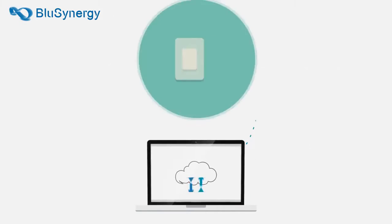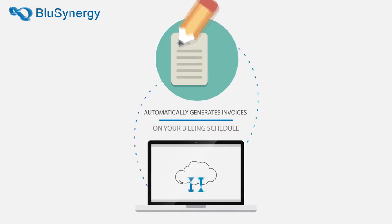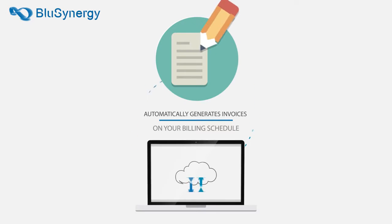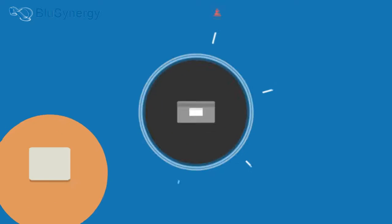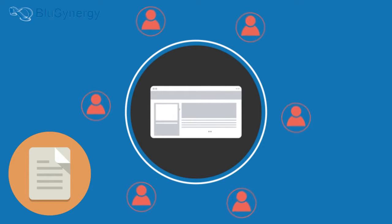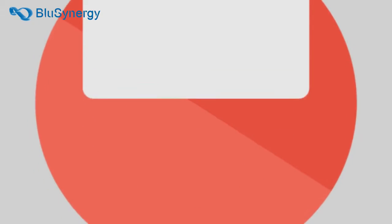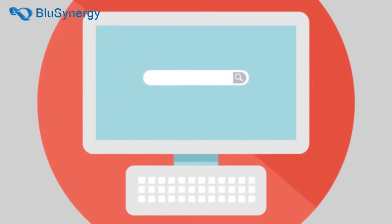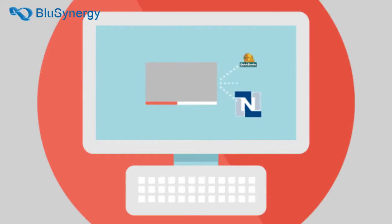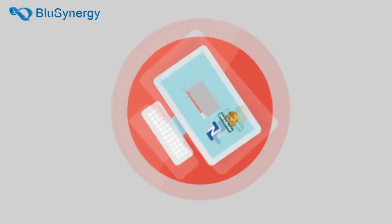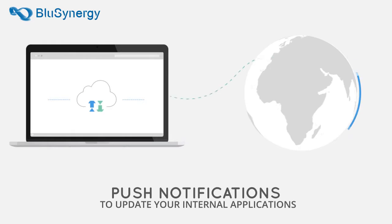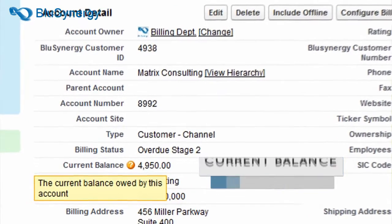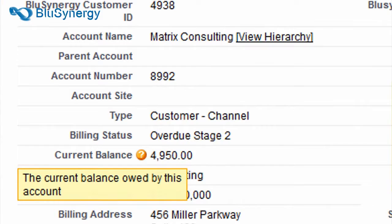Blue Synergy's billing engine automatically generates invoices on your billing schedule. We handle bill presentment to your customers and make the invoices available on the self-service portal inside your website. You may want to use the Blue Synergy ERP connectors to automatically synchronize your accounting systems like QuickBooks and NetSuite, or perhaps use our push notifications to update your internal applications. And of course all of these invoices are instantly available inside Salesforce.